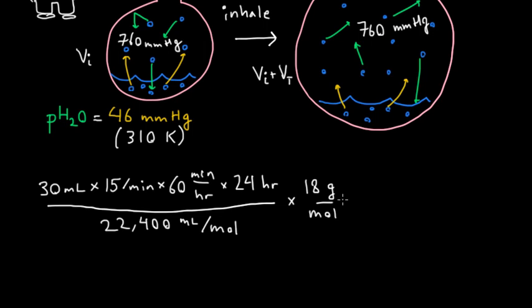And this gives us an answer we can do something with, which is approximately 500 grams. And that's not insignificant. That's about one liter of liquid water. Most of us drink about two liters. So based on this calculation, we breathe out about half of all the water that we drink.